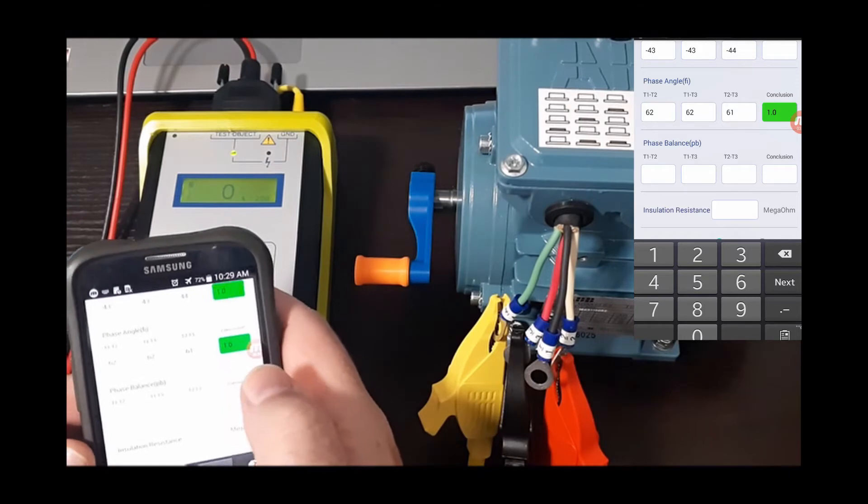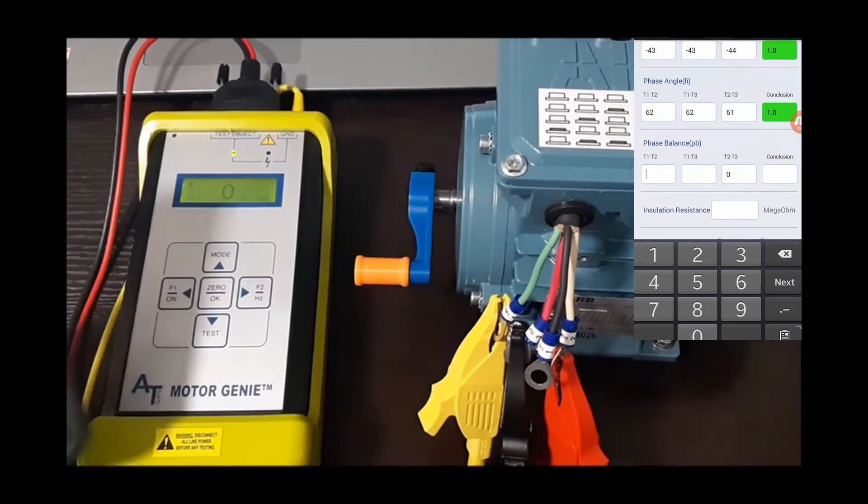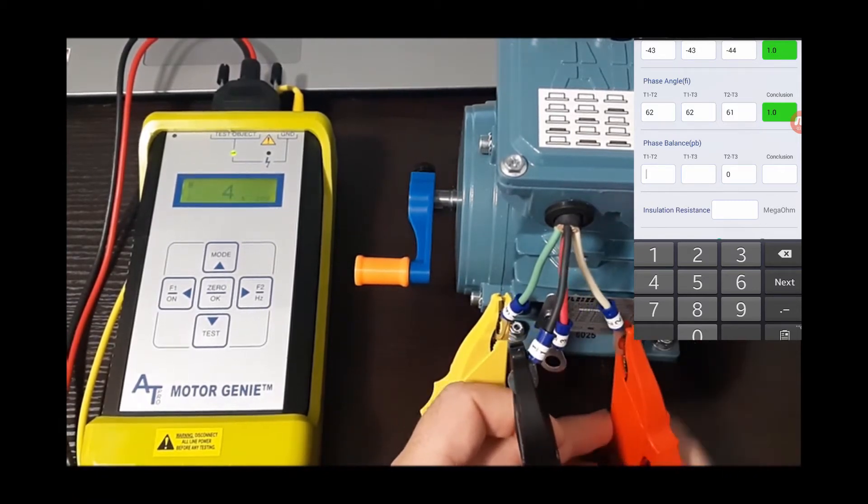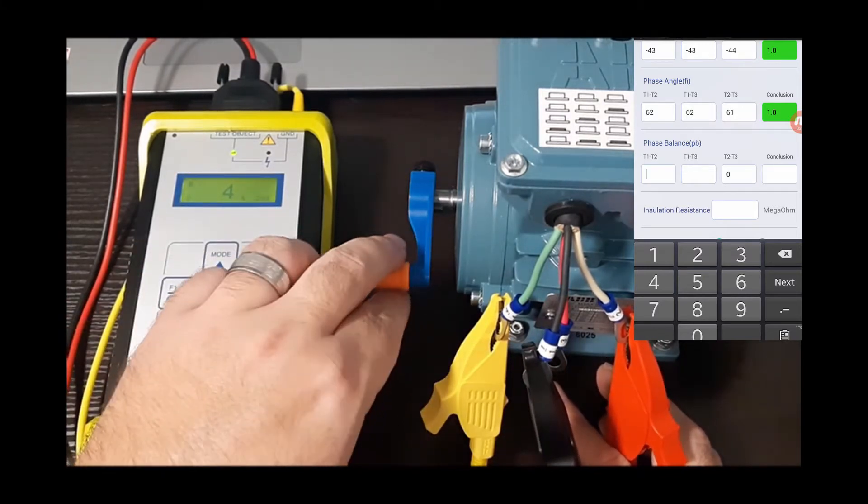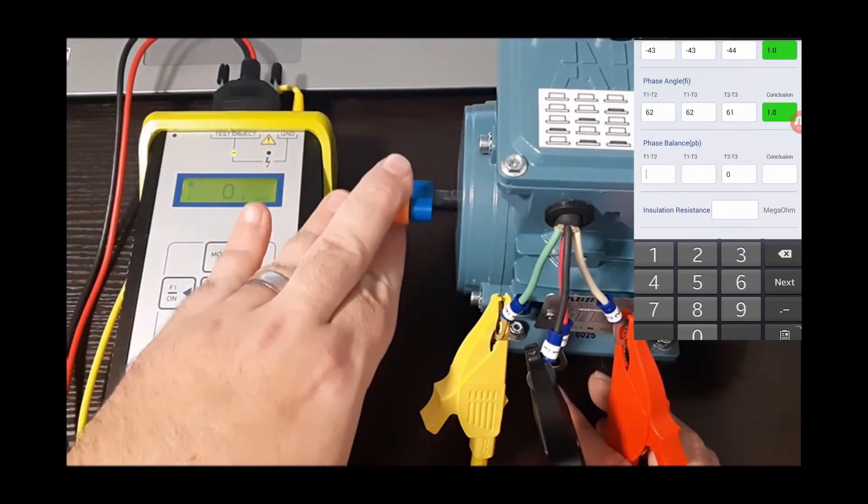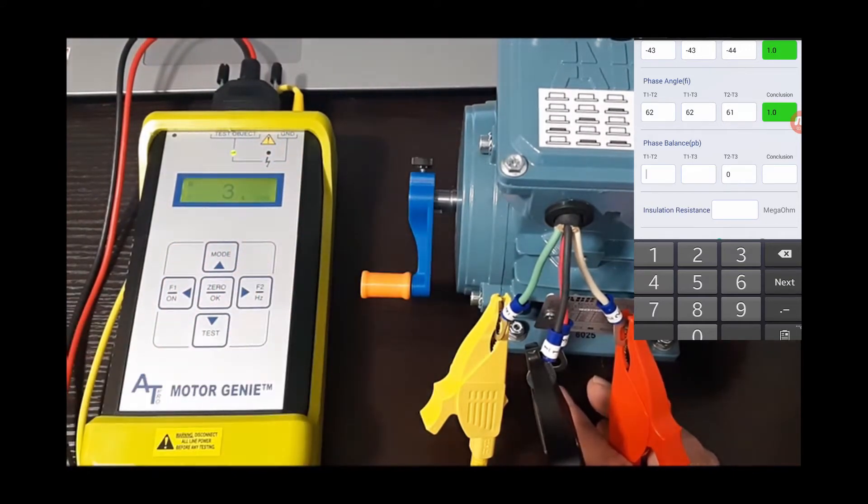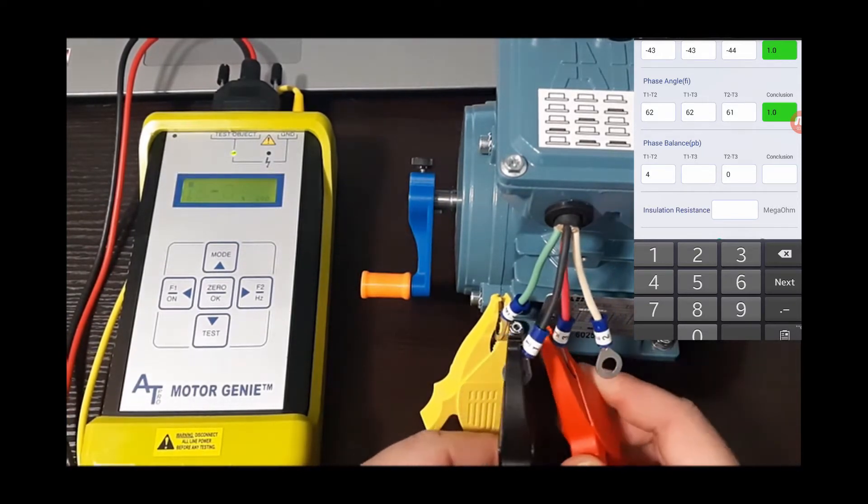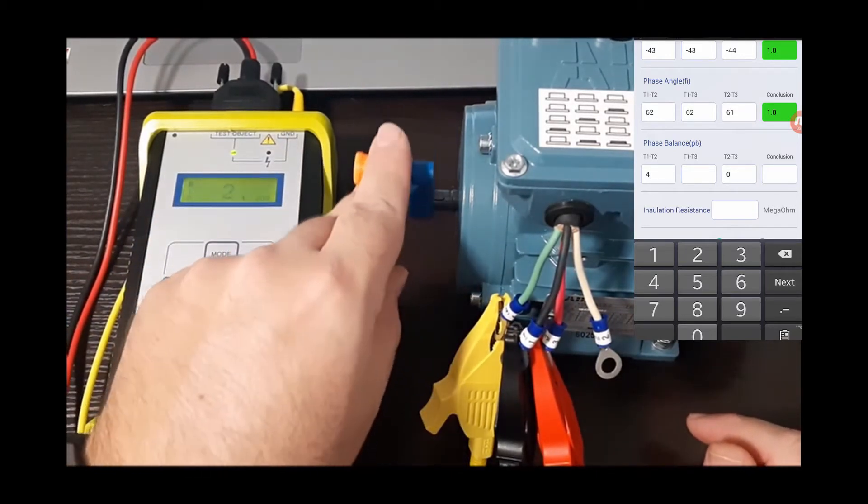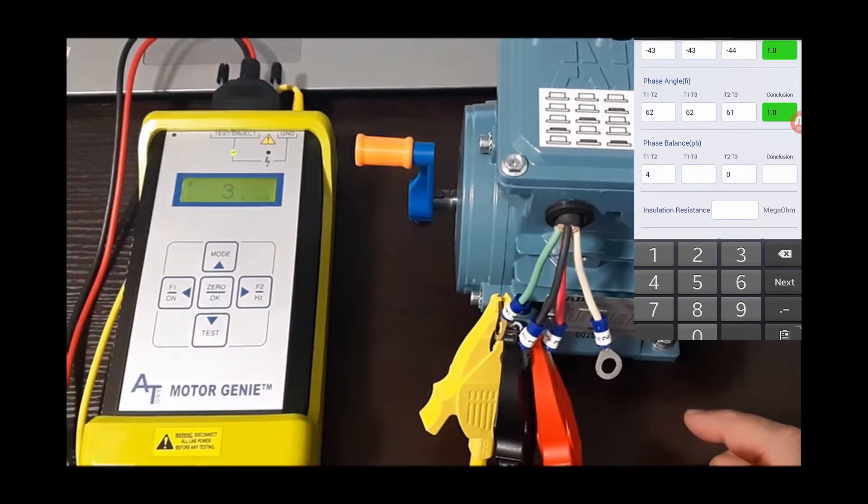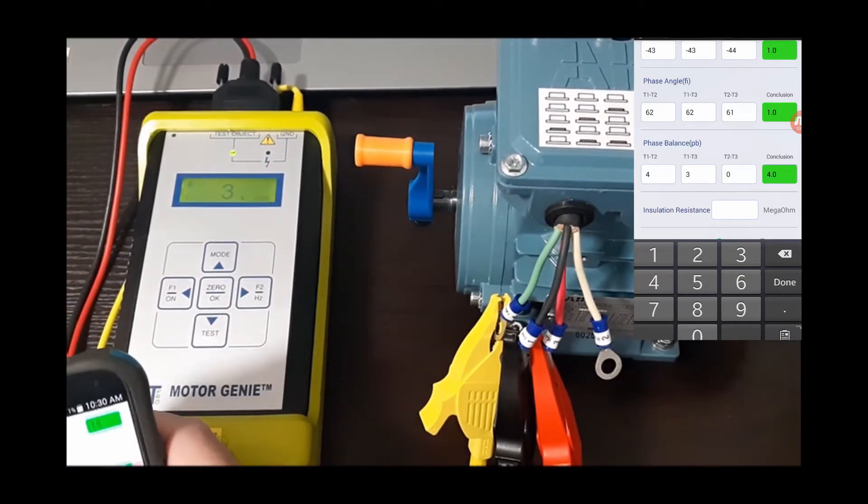And we're going to go to 1-2, looks like we've got a 4 for our percentage, and then we're going to switch to 1-3, looks like we have 3. So that's another good reading on phase balance.